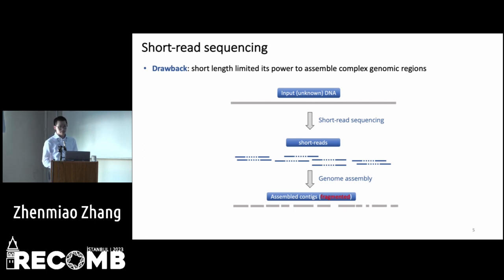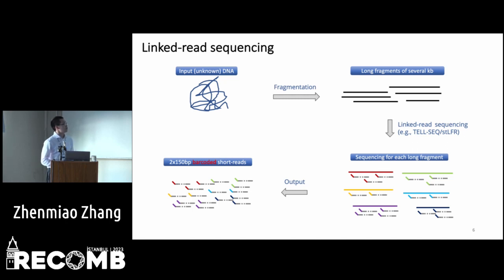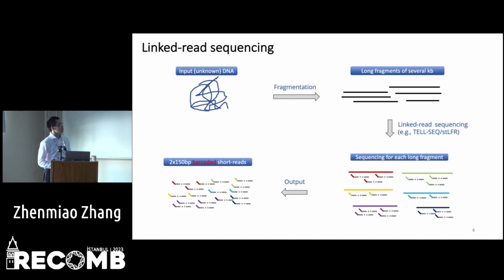From short reads, we can only get very fragmented contig sequences. To mitigate this drawback, linked-read sequencing integrates long-range information into the sequencing. From the input unknown DNA, it is fragmented into non-fragments of several kilobases, which are sequenced by linked-read sequencing technologies such as 10x Genomics, MGI's single-tube long fragment read sequencing. The short reads from the same non-fragment are annotated with the same barcode.